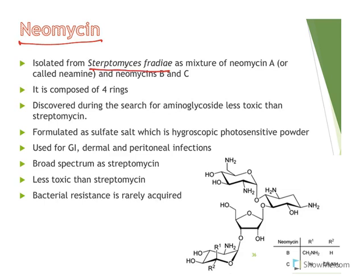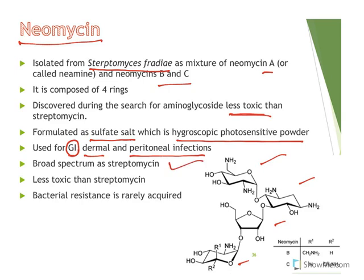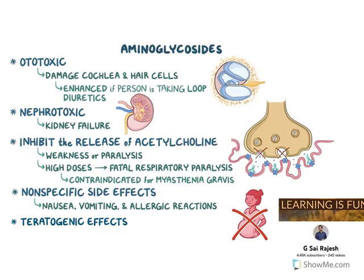Neomycin is isolated from Streptomyces fradiae as a mixture of A, B, and C. Unlike streptomycin and kanamycin, it is composed of four rings, and it is less toxic than streptomycin. It is formulated as a sulfate salt, which is a hygroscopic, photosensitive powder. It is mostly used to treat gastrointestinal, dermal, and peritoneal infections. It is broad spectrum, less toxic than streptomycin, and bacterial resistance is rarely acquired — these features give neomycin greater clinical utility.